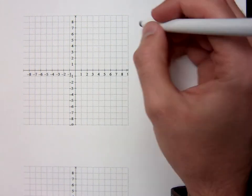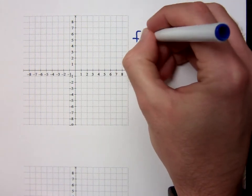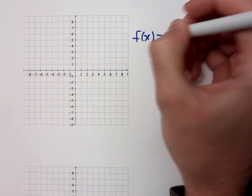So we just looked at doing vertical shifts, and let's look at some of the examples that we have for the horizontal translations.